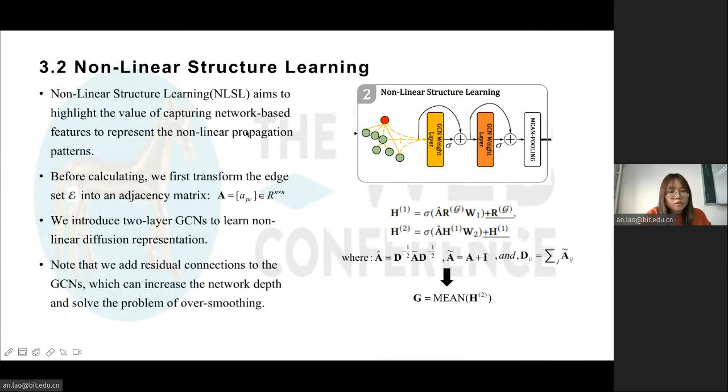Non-linear structure learning aims to highlight the value of capturing network-based features to represent the non-linear propagation patterns. The non-linear structure reflects the paths taken by rumors as they spread through communities. By integrating the information in the nodes along these paths, the module can enhance the representation of source nodes through the structural context features and discover clues that are useful in determining the authenticity of rumors.